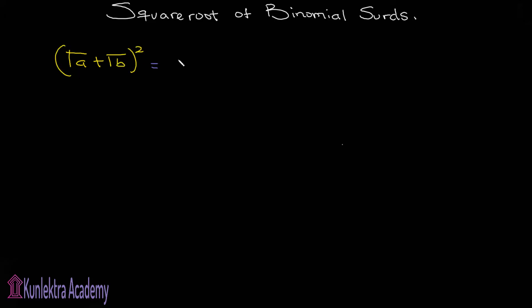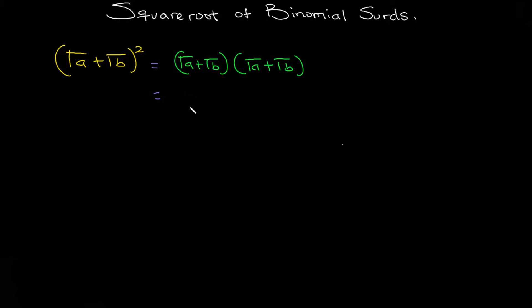This is equal to (√a + √b) times (√a + √b). Now expand this: that will be √a times √a, which is √a squared, plus √a times √b, which gives √(ab), plus √b times √a, which gives √(ab).